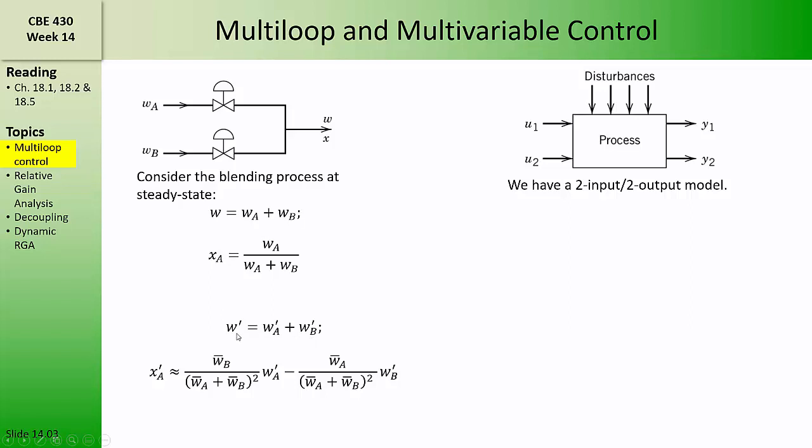Conversely, if we're pairing WB with W, we must pair WA with XA. And because WB is large compared to WA, this transfer function will have a larger gain than this transfer function. Because the gain is proportional to WB, which is large. So if WA is small and WB is large, we might pair WB with W and WA with XA based on the gains. We'll use transfer function gains to decide how we should pair controlled variables and manipulated variables.